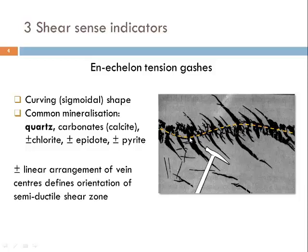The common mineralization in en échelon tension gashes is quartz, but depending on dissolved fluid content, you might also find carbonate, chlorite, epidote, pyrite, and other minerals in such hydrothermal veins, as these represent hydrothermal fluid influx from which precipitation occurs.